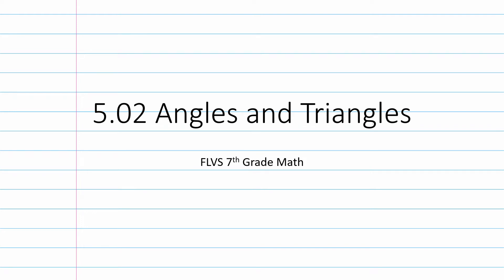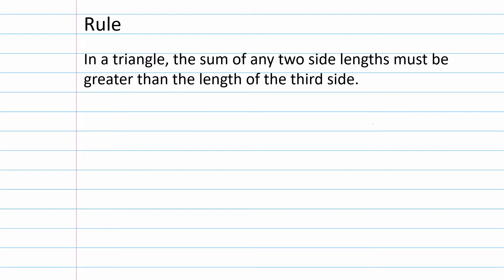We're moving through our geometry module, going on to 5.02 angles and triangles. We have a rule: in a triangle, the sum of any two side lengths must be greater than the length of the third side. But what does that even mean? Let's go ahead and do an example so we can see what we're talking about.